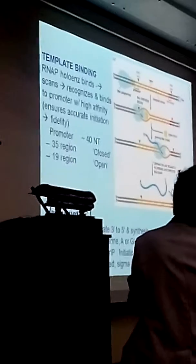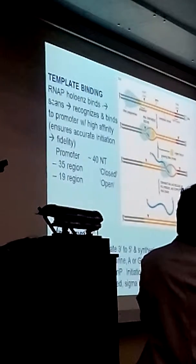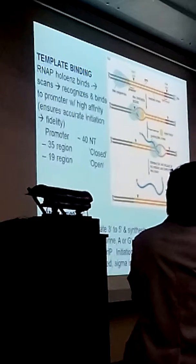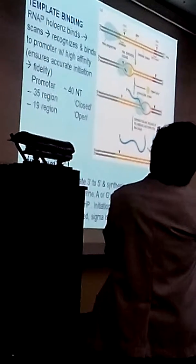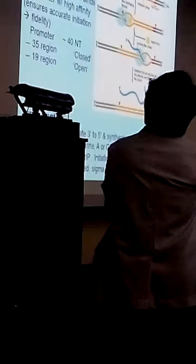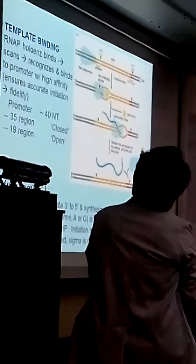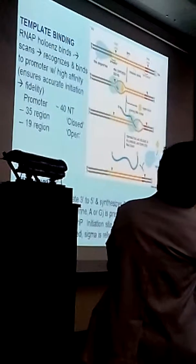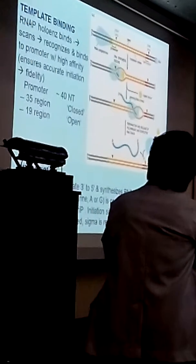So template binding. The RNA polymerase binds, first there is the closed complex. It recognizes and binds to the promoter with high fidelity, and that is the function of the sigma factor in the enzyme that recognizes and allows the enzyme to bind to the promoter site. This will ensure accurate initiation. So initially it is closed, then it will open. So the closed complex, and this is now the open complex, and it will now allow initiation to happen.